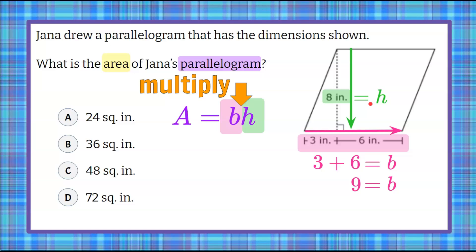Now we're ready to use our formula. So A is going to be equal to nine of our base multiplied by our height of eight. Nine times eight is 72.